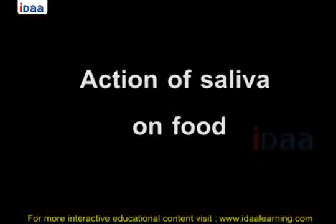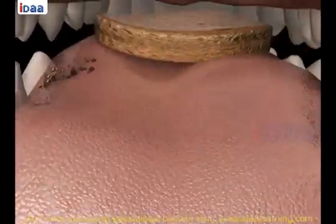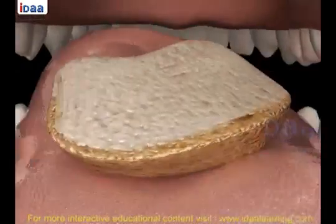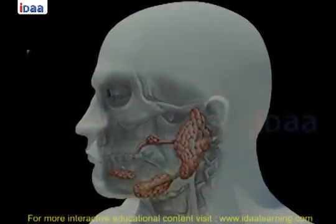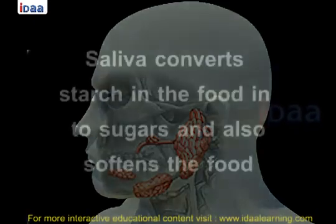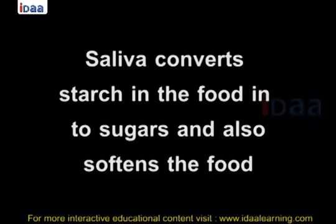Action of saliva on food. During chewing, food mixes with saliva. Saliva is secreted from salivary glands located on the lower jaw between the tongue and teeth. Saliva converts starch in the food into sugars and also softens the food.